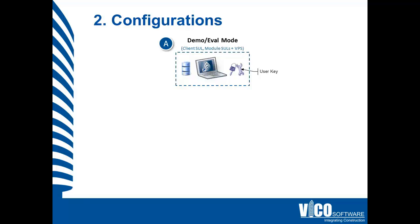Configuration A feels just like using VicoOffice as a local file-based system. It's the configuration used for demonstrations, working offline as an isolated user, or evaluating the VicoOffice workflow for your company. Configuration A has the Vico project server, the VicoOffice client, and a single user license on the same machine, and it does not rely on any collaborative project or shared license server.